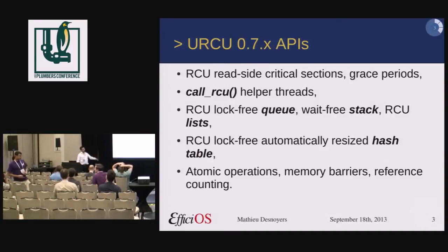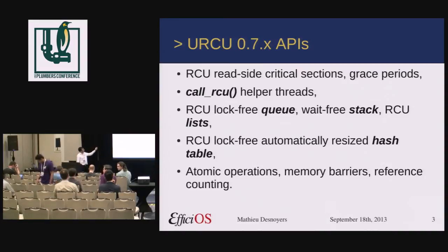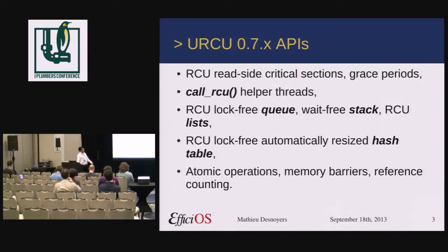What was there before the last year, so in version 0.7: we had RCU read-side critical sections, grace periods, call RCU helper threads. We had lock-free queues, wait-free stacks, RCU lists. We have a RCU lock-free hash table that can be automatically resized depending on the amount of data in it. The reads in the hash tables are actually RCU and therefore wait-free. It provides atomic operations, memory barriers, and reference counting.